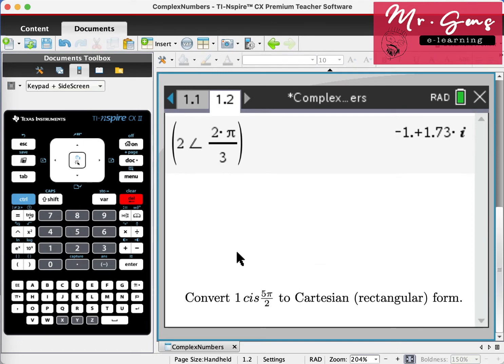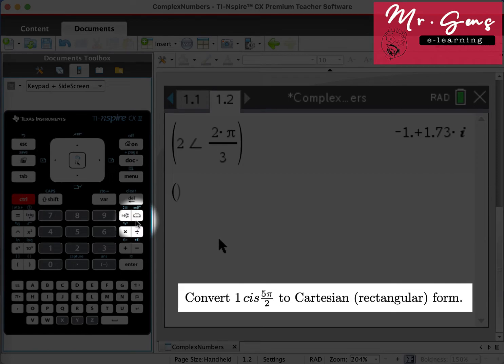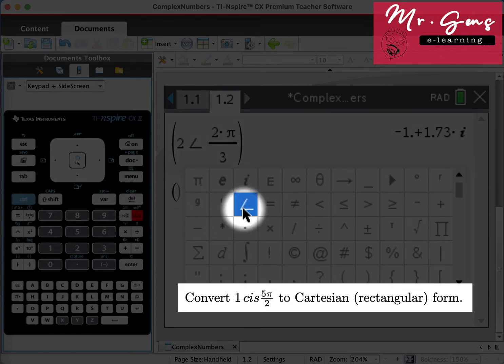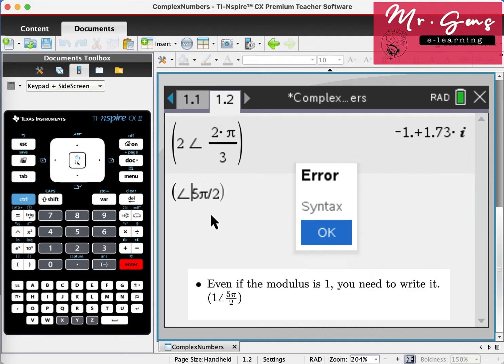Let's do this example now. Parenthesis, modulus is 1. Let's pretend we don't write it. Another option for the angle sign is Ctrl Catalog Sign, shortcut, and 5π over 2. It is another syntax error. Even if the modulus is 1, you are supposed to type it.